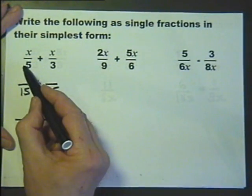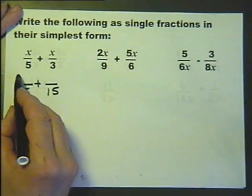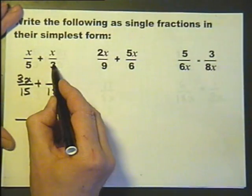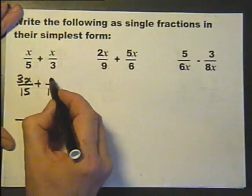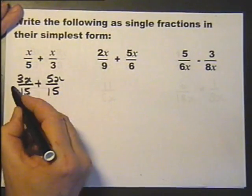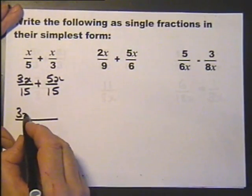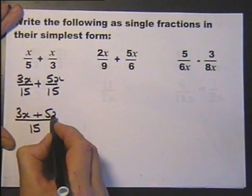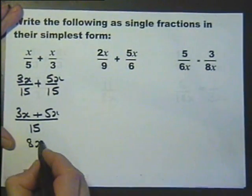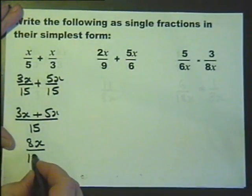So, this has been multiplied by 3, so 3 times x is 3x. This has been multiplied by 5, so 5 times x is 5x. So instead of writing it like that, I'm going to write it like this. Doesn't matter if you do it like this or not, it's just the way I do it.